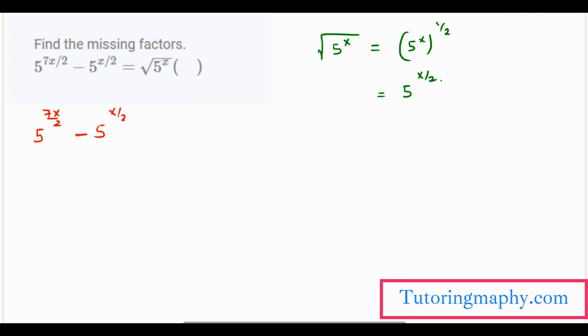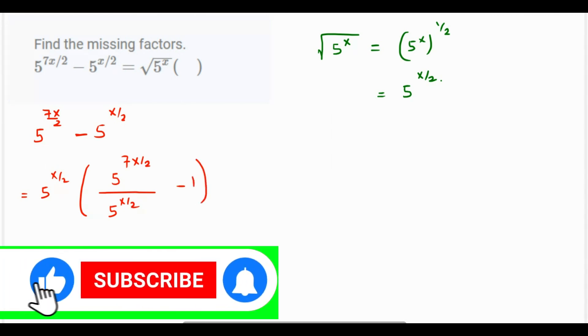So all we have to do is take 5 raised to x over 2 as a common factor. So we are left with 5 raised to 7x over 2 over 5 raised to x over 2 minus 1. Over here we'll have 5 raised to x over 2 as it is.